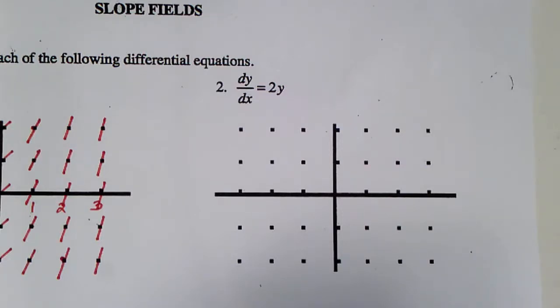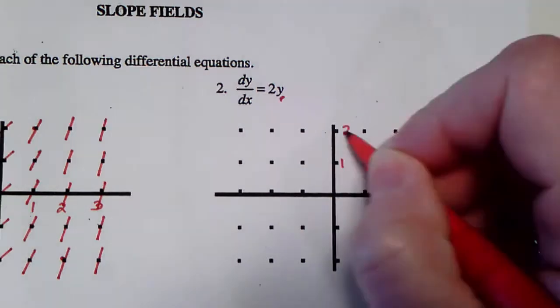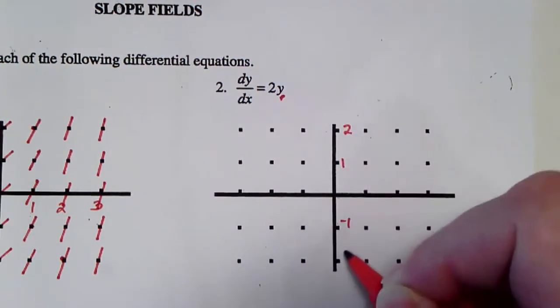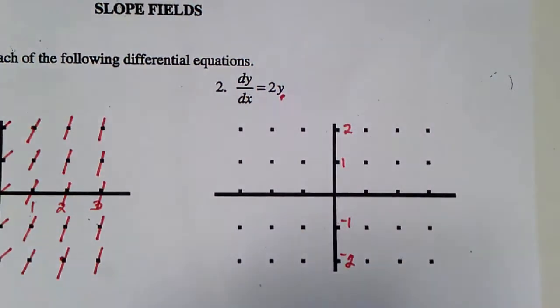In number two we have a differential equation that is solely based upon the y-value. As we substitute in our y-values, what we're going to see is that it's going across horizontally, that we're going to have parallel slope cuts.